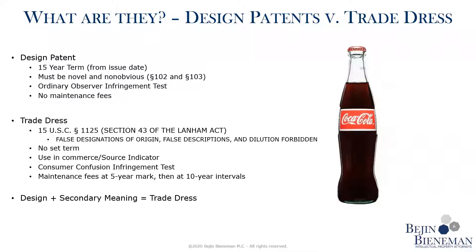Whereas trade dress, you have to initially pay maintenance fees at five years, and then at ten years, and it goes after that. One strategy that can be considered is converting the design patent into trade dress protection as the design patent expires, and the way to do this is to establish secondary meaning in the design. A good application for this would be something akin to a Coke bottle. When it first came out, it was just another shape of a bottle, protectable under a design patent. Throughout use, it develops secondary meaning, which can then be translated into trade dress.